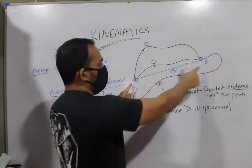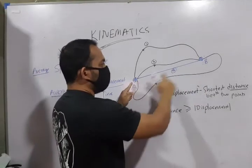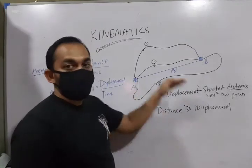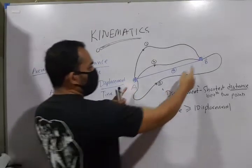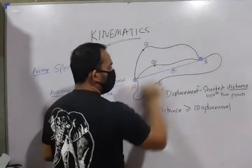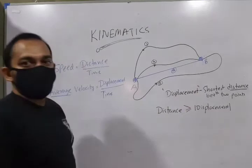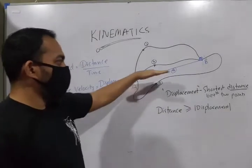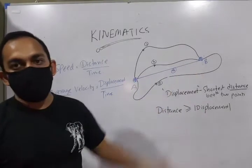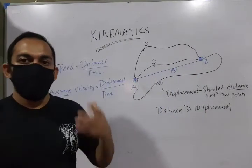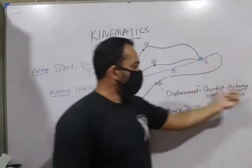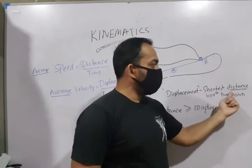You can see here that displacement not only has a magnitude, it also has a direction. So, the displacement is obtained by joining point A and B with a straight line segment. If you draw a line segment connecting A and B, the length of that line segment represents the magnitude of the displacement. So, displacement is a shortest distance between two points.